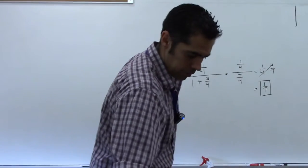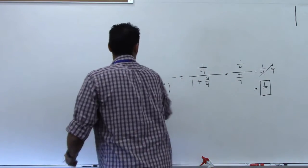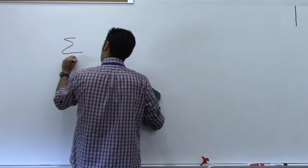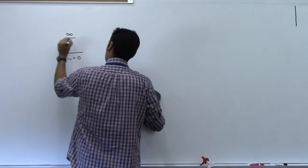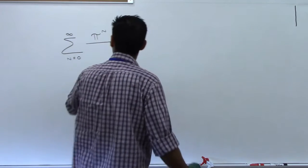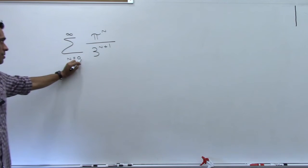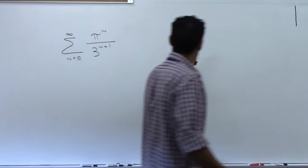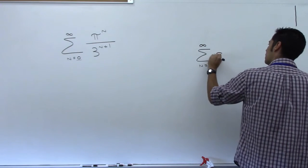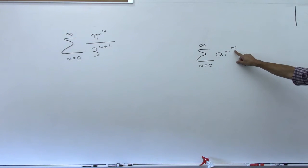Number 11 — let me work that one for you. The series is the sum from n=0 to infinity of pi^n over 3^(n+1). Since it starts at 0, the formula we need uses r^n instead of r^(n-1). I'll try to make both exponents equal to n by rewriting 3^(n+1) as 3^n times 3^1.